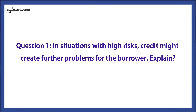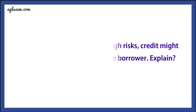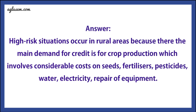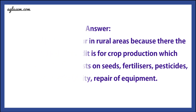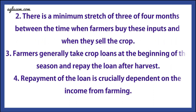Question 1, from page 52: In situations with high risk, credit might create further problems for the borrower — explain. Answer: High risk situations occur in rural areas because the main demand for credit is for crop production, which involves considerable cost on seeds, fertilizers, pesticides, water, electricity, and repair of equipment. There is a minimum stretch of three or four months between the time farmers buy these inputs and when they sell the crop. Farmers generally take crop loans at the beginning of the season and repay the loan after harvest. Repayment of a loan is crucially dependent on the income from farming.